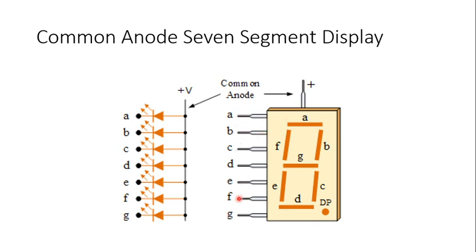In common anode configuration, there are 8 terminals — A, B, C, D, E, F, G, and dot point — and these are cathode outputs. The anode is connected to VCC, so at the cathode you have to apply logic 0. For common anode 7-segment display, if you want to glow a particular LED, you have to make that particular terminal 0, and it will turn on that LED, allowing you to display different digits.